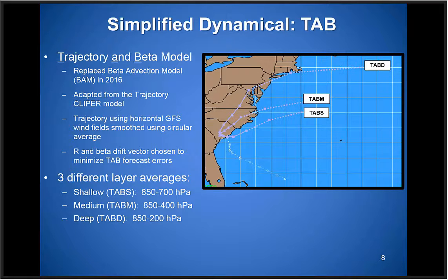What does a large spread between the TAB models indicate about the atmospheric environment around the storm? Lots of shear — exactly. In this particular case, the deep-layer TAB model has a much farther north and farther east track, indicating significant vertical wind shear. If there's very little to no shear, the TAB models will all be basically right on top of each other.